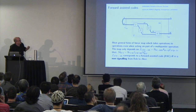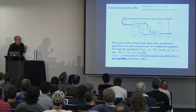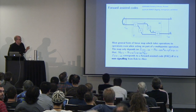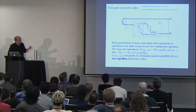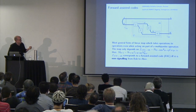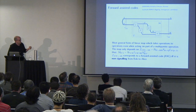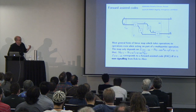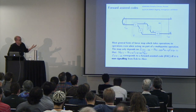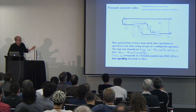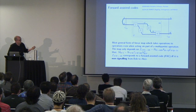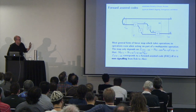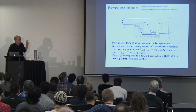This is a result of Chiribella, D'Ariano, and Perinotti. Furthermore, this map depends only on a bipartite operation Z, which is defined by the concatenation of these operations. The dependence looks like this in terms of the Choi operators for M, the bipartite operation Z, and the noisy channel, respectively — it's just a simple linear function of the code.